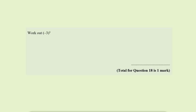So let's have a look at the first question: work out minus 3 whole cubed. Now the common mistake students will make is they will write down minus 3 times by minus 3 times by minus 3, and the answer they will write is 27 because 3 cubed is 27.